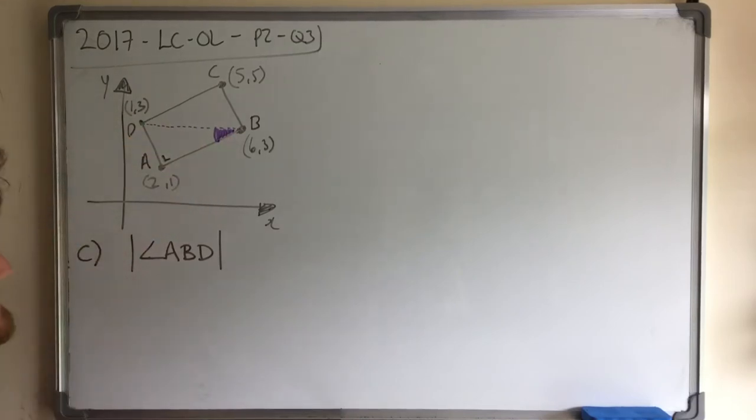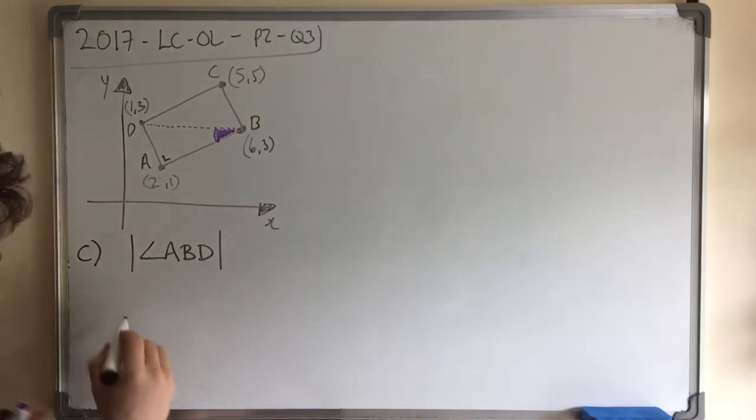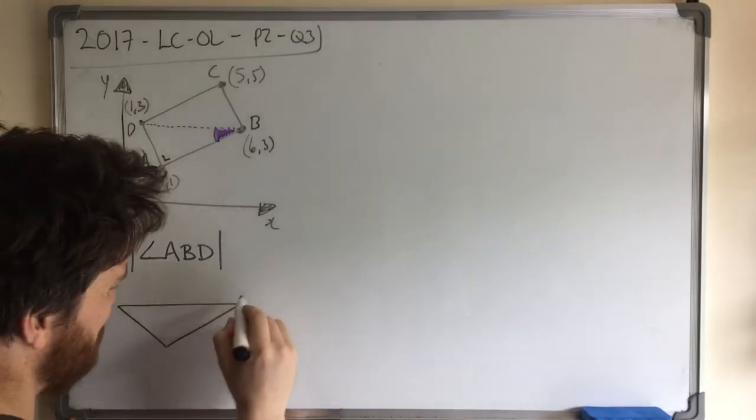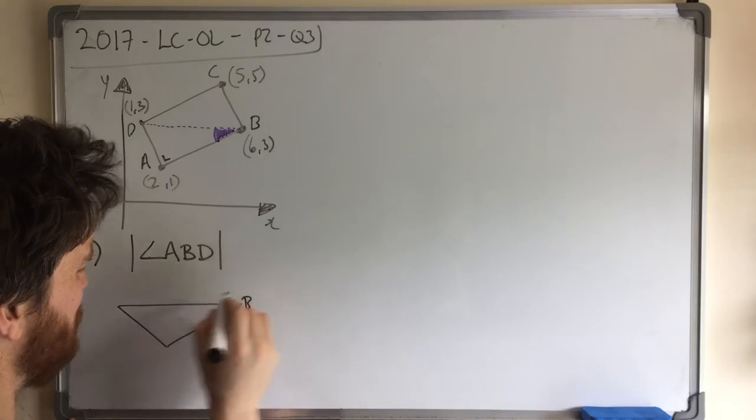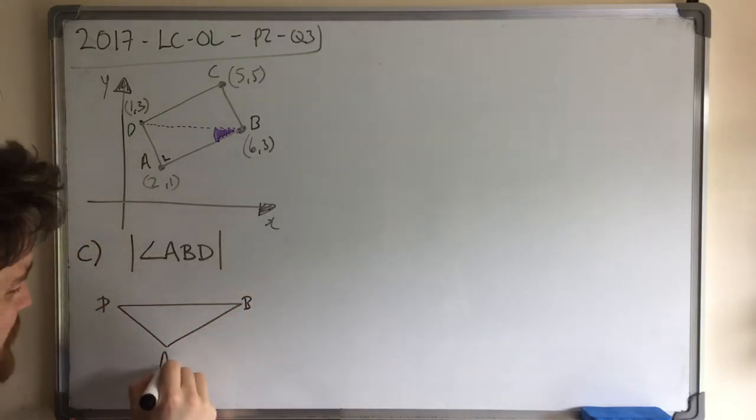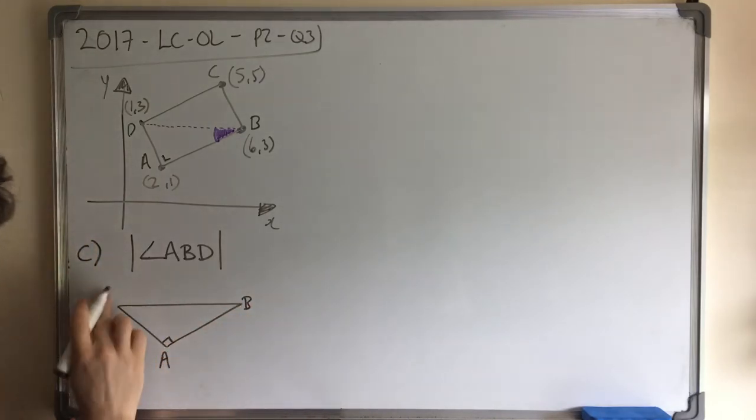So now hopefully we can see that we have a triangle. Now, might upset people because the triangle is not the way we tend to draw it in our books. We tend to draw them maybe orientated differently, but it's a right angle triangle.